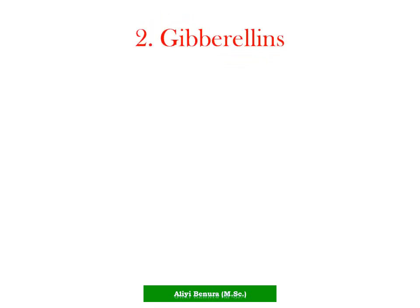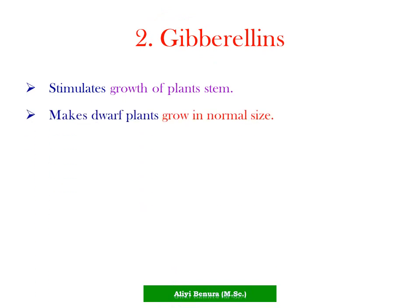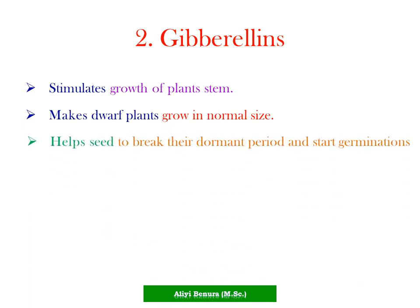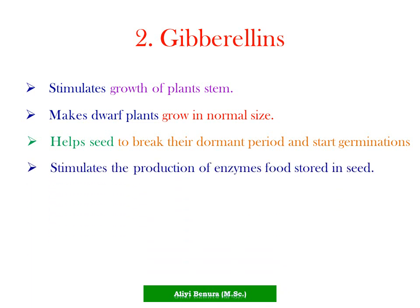Gibberellins stimulate growth of plant stems, making plants grow to normal size. They help break the dormant period and start germination, and stimulate production of enzymes found stored in the seeds.